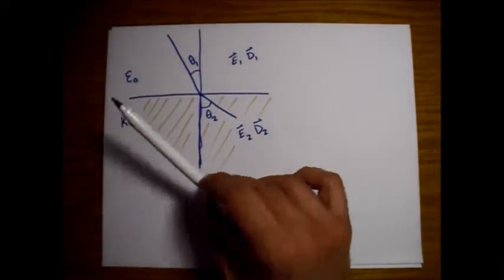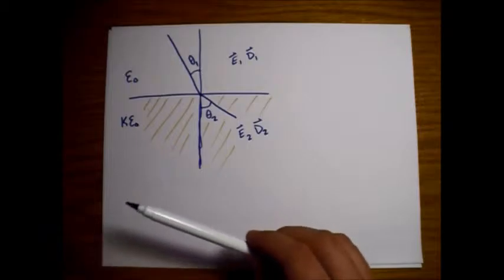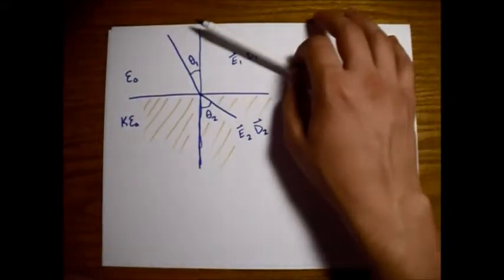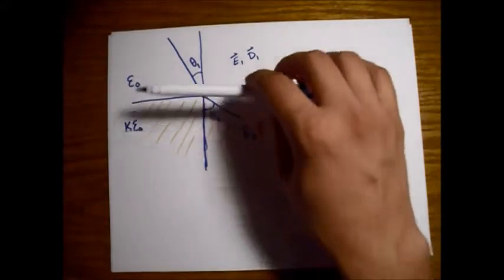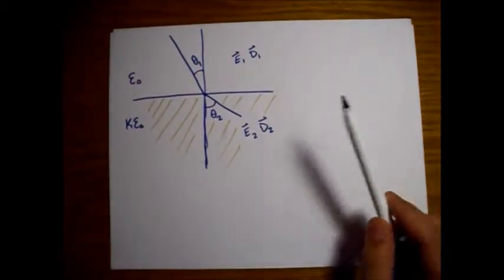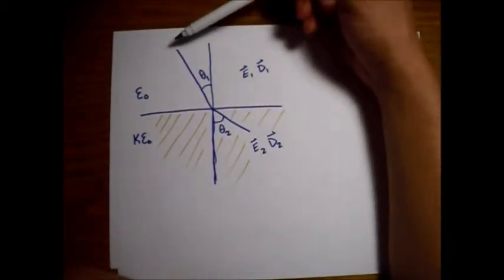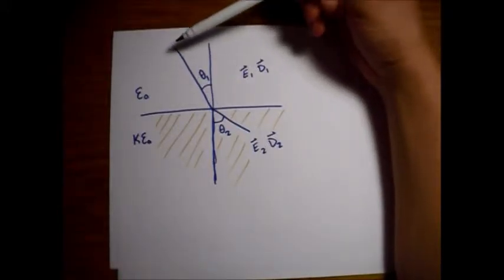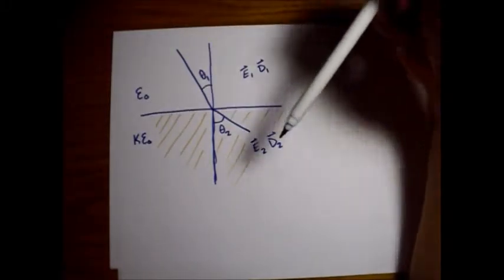Say we have a slab of linear dielectric material placed in a vacuum. There's an electric field out there in the vacuum, but the surface of our slab of dielectric is not perpendicular to the electric field. So there's an angle, which I'm calling theta 1, that the electric field is along — and so is the displacement field — at this angle theta 1 from the normal to the dielectric slab.